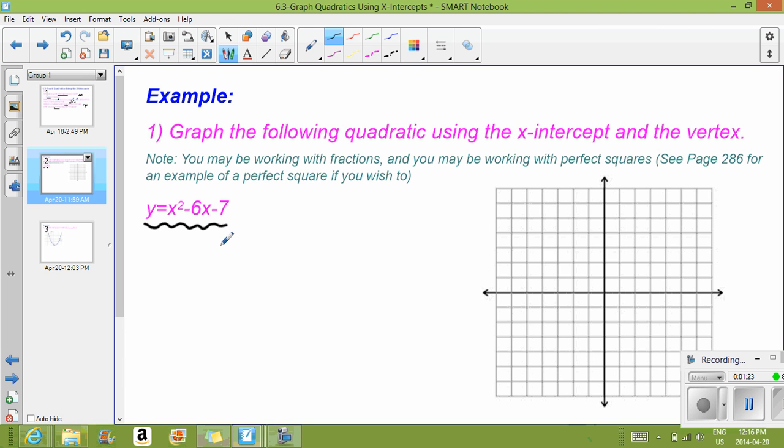Again, it's a simple trinomial. You can do it, it could be complex, there could be perfect squares. If you'd like to see an example of a perfect square, that would be on page 286 in your textbook, and that would show you how to do it with a perfect square, but it's all the same steps.